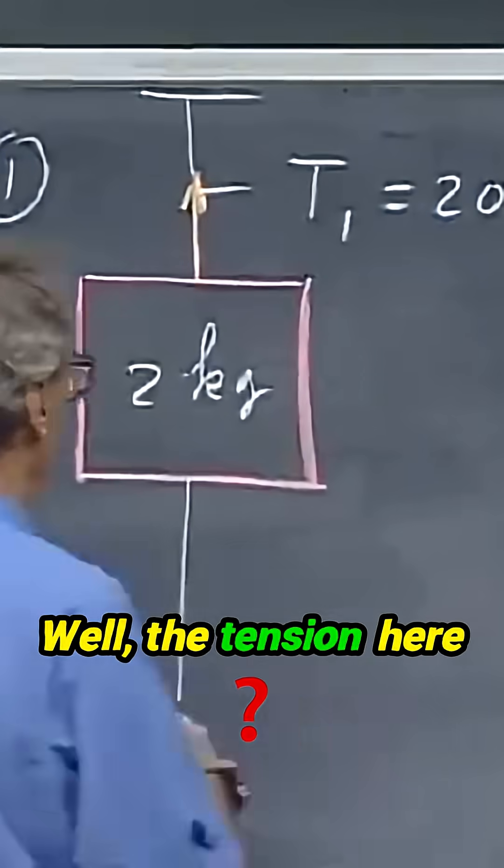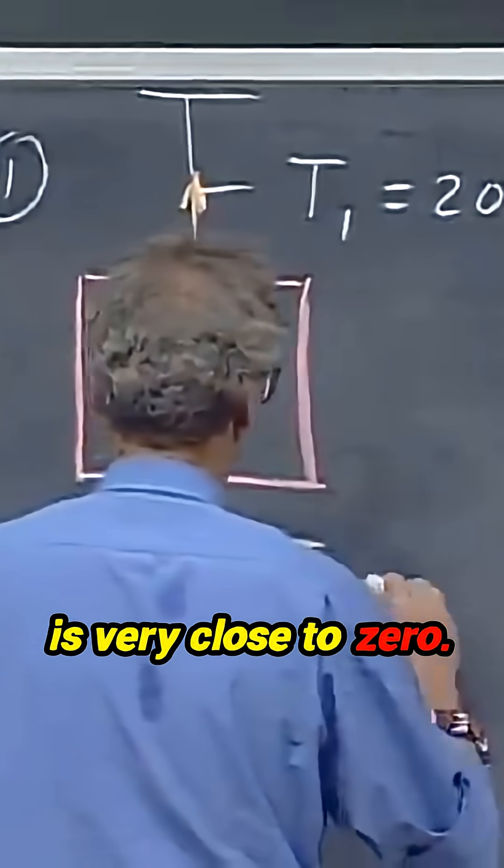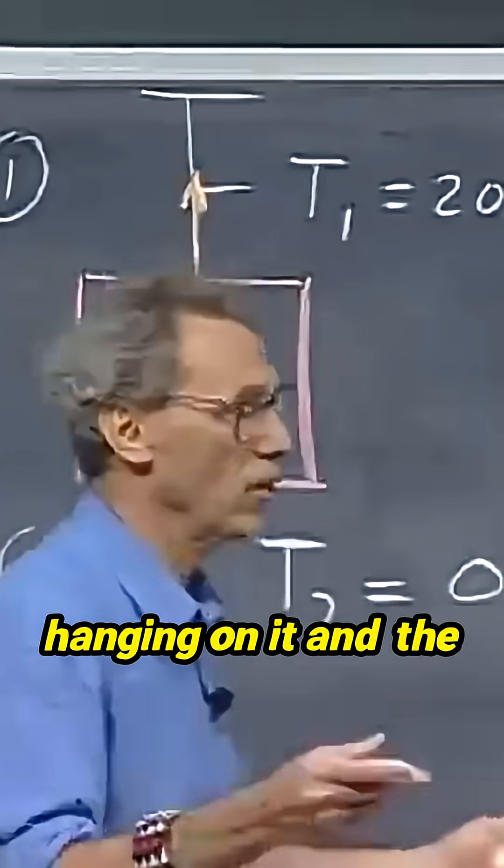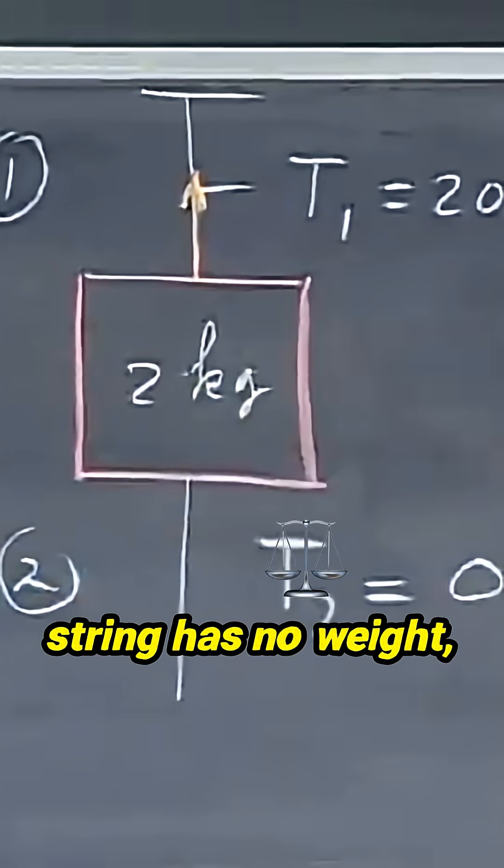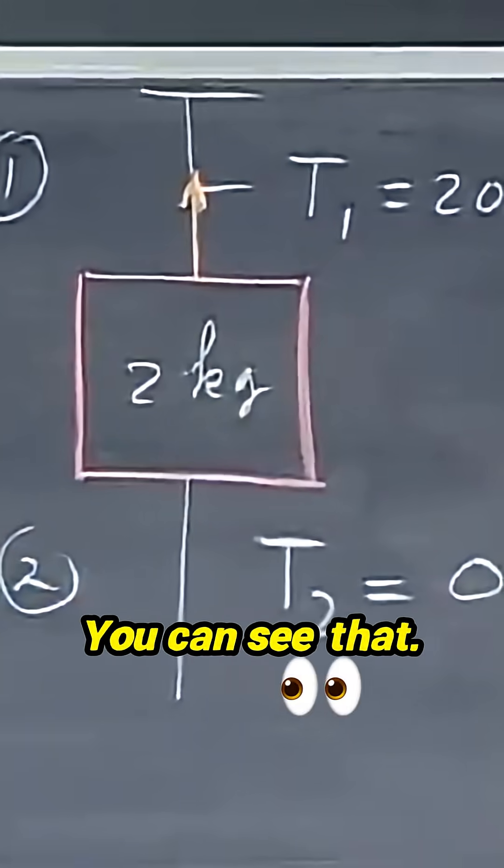What is the tension here? Well, the tension here is very close to zero. There's nothing hanging on it, and the string has no weight, so there's no tension there. You can see that.